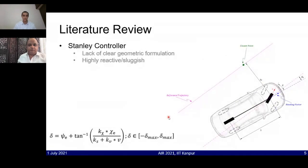The third state-of-the-art method is the Stanley controller, which was primarily designed to mitigate the drawbacks associated with the pure pursuit algorithm. Here we can see that the control algorithm is considering both heading as well as cross-track errors. However, there is a lack of clear geometric formulation. The inverse tangent function used in the control law is just to minimize the overshoot in control commands and does not form any geometric formulation with respect to the vehicle geometry and the reference trajectory.